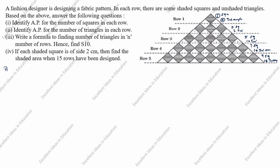First question: identify the AP for the number of squares in each row. Row 1 square is 1, row 2 is 3, row 3 is 5, row 4 is 7, row 5 is 9. So the AP is 1, 3, 5, 7, 9.